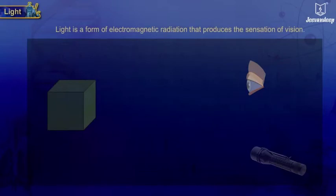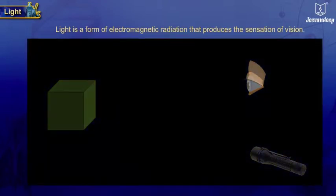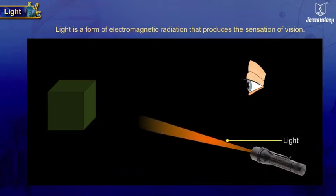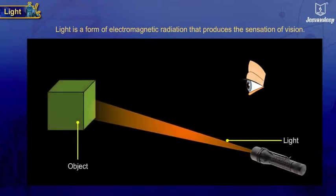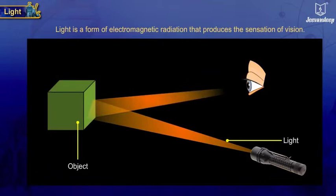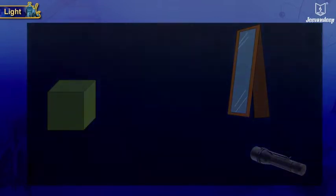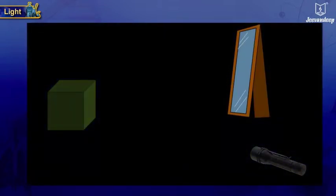Light is a form of electromagnetic radiation that produces the sensation of vision. When light falls on an object, is reflected back, and reaches our eyes, we are able to see the object and an image of an object.